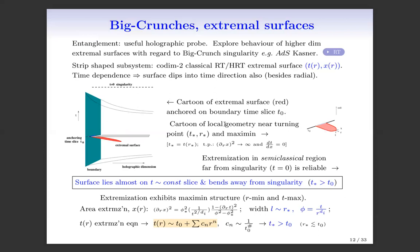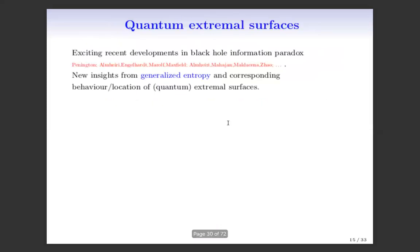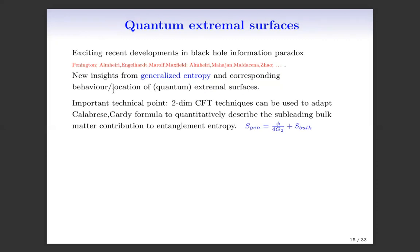I'll now move on to the study of quantum extremal surfaces. There have been exciting recent developments in the black hole information paradox, with new insights from generalized entropy and quantum extremal surfaces. An important technical statement is that two-dimensional CFT techniques can be used to adapt the Calabrese-Cardy formula for entanglement entropy in two-dimensional theories, to quantitatively describe the sub-leading bulk matter contribution to entropy. The generalized entropy has a classical area piece and a bulk matter entropy piece.